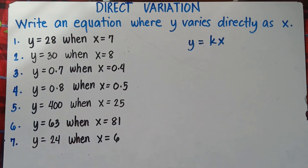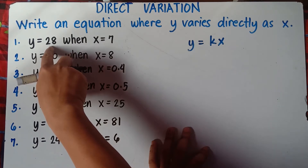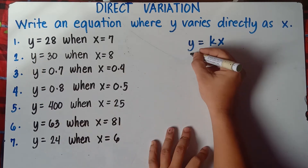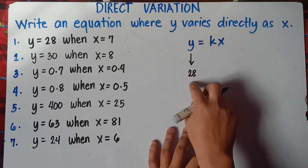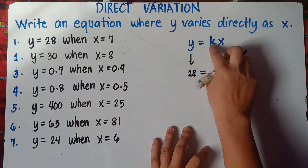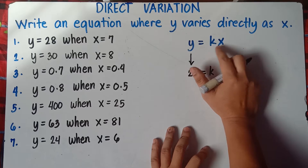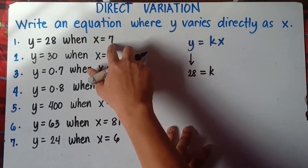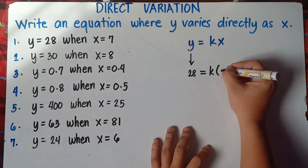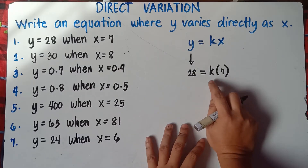We have 7 examples for you to really understand how to find the equation. So for number 1, our y is 28. Simply substitute 28 for y, so 28 equals k times x. And if you have variables close to each other, it means multiplication — kx means k times x. And our x is 7, so k times 7.